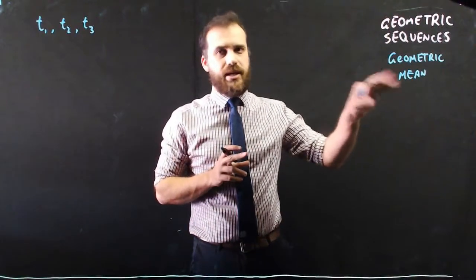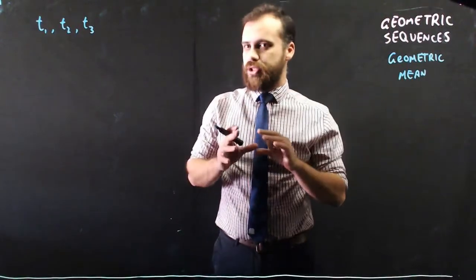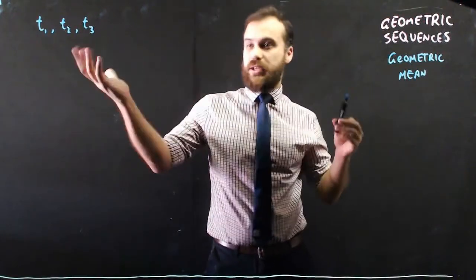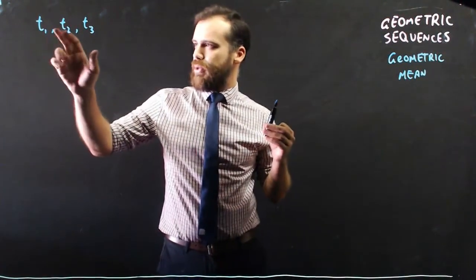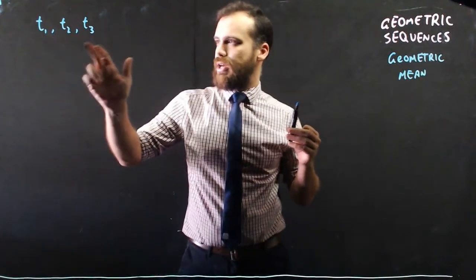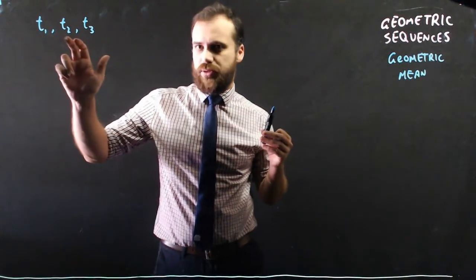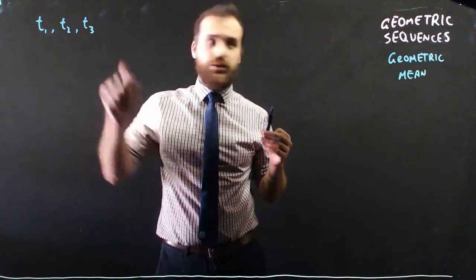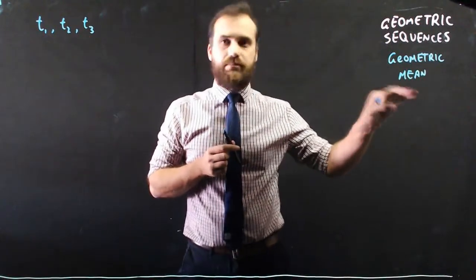Alright, so we're going to talk about geometric mean here. What we mean by geometric mean is if we have a whole series, a geometric sequence, and we know one term and we know the other term, but we don't know the middle term. The middle term of two terms in a geometric sequence is called the geometric mean.